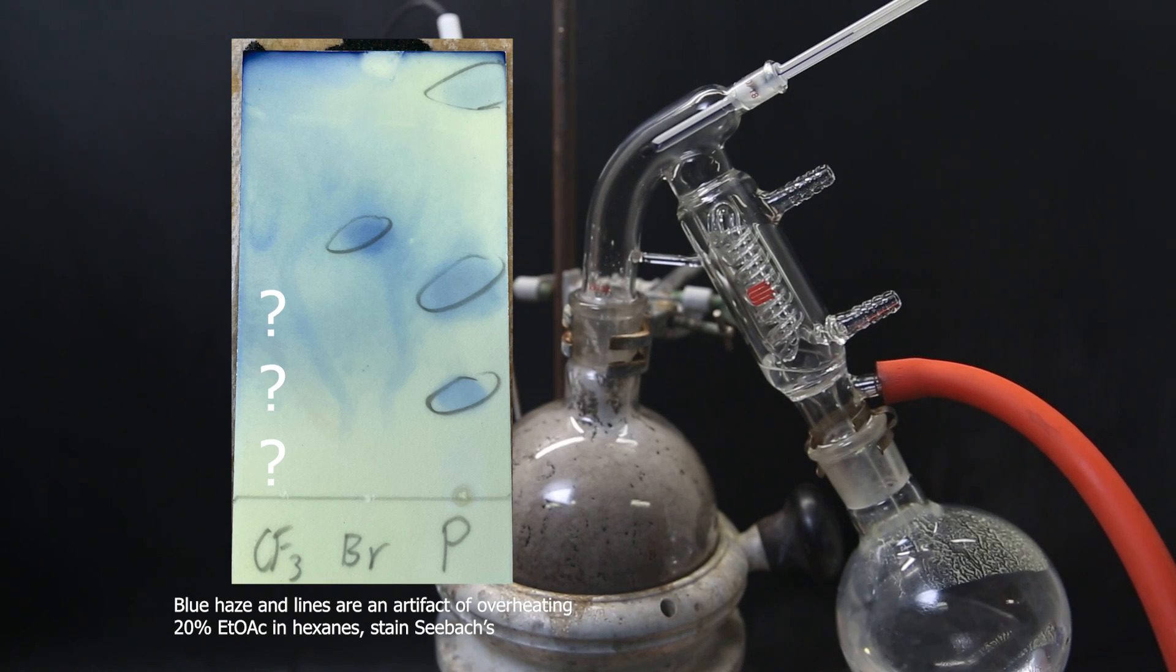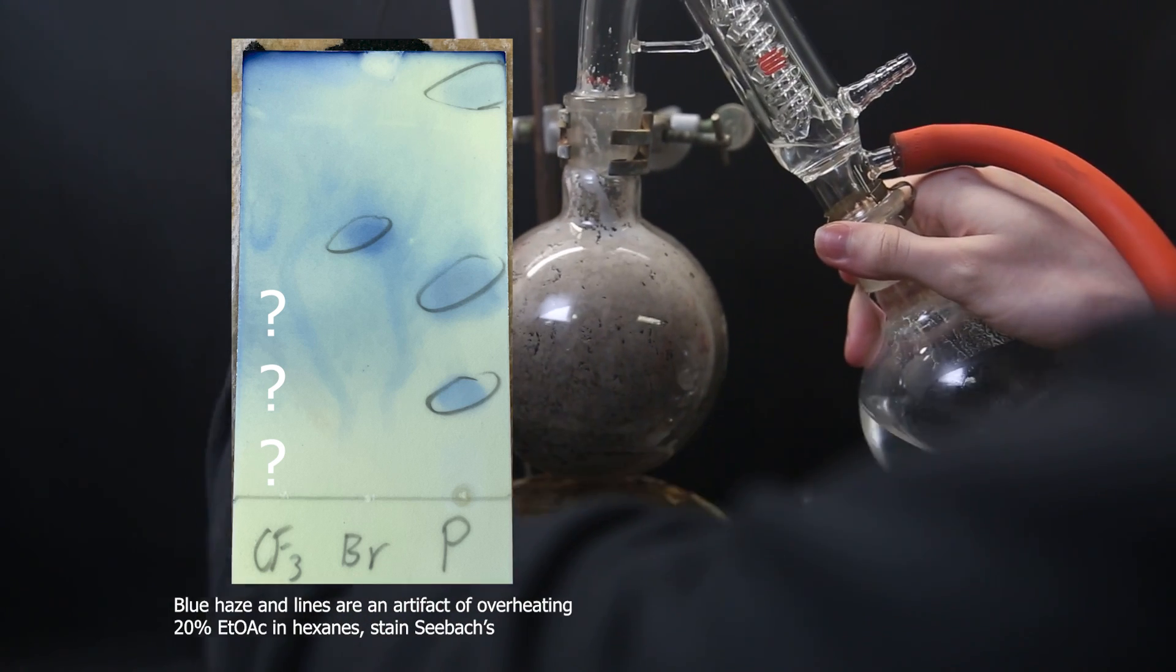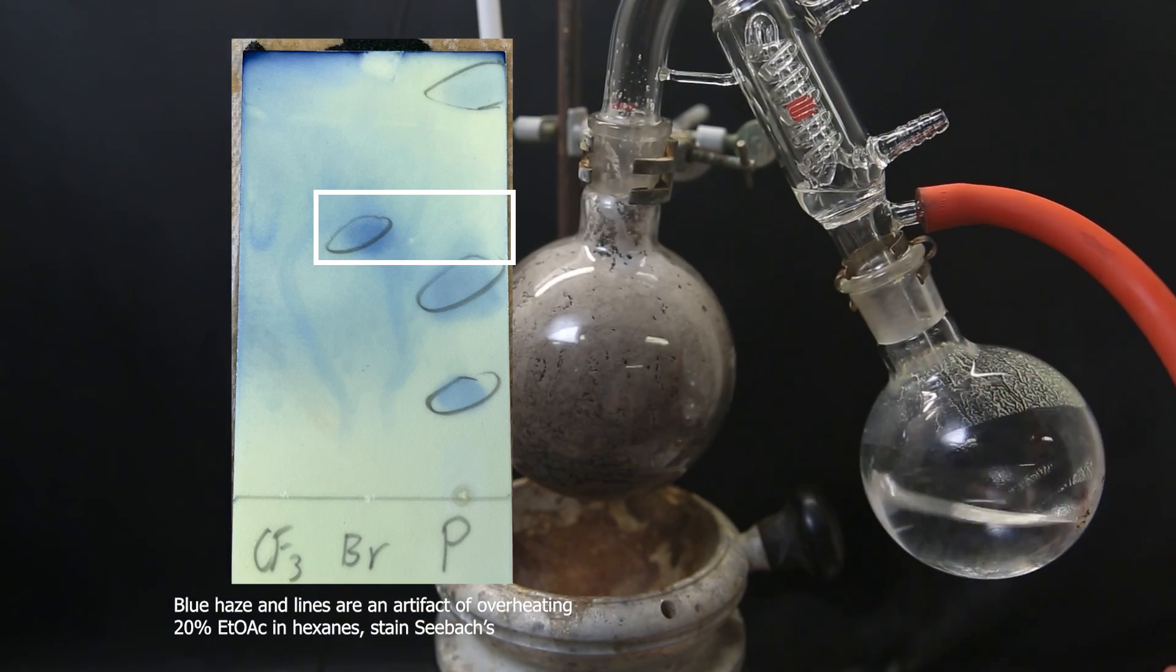The boronic acid starting material doesn't seem to stain, but it's not really a problem since it's likely to have all reacted away anyway. We can see that with the 4-bromo benzaldehyde, as it doesn't show up in the product mixture.